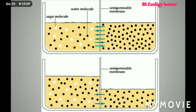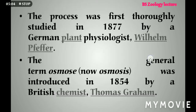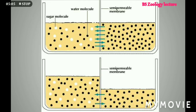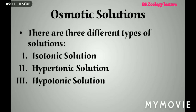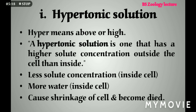In this diagram we can see the movement of water molecules, and the balance becomes equal on both sides. The osmotic solutions are: number one, isotonic solution; number two, hypotonic solution; and number three, hypertonic solution.